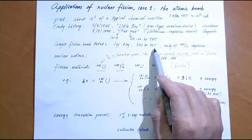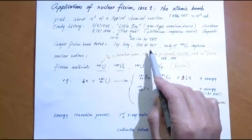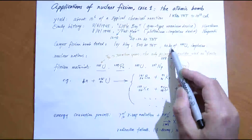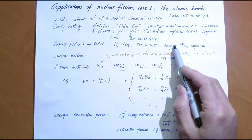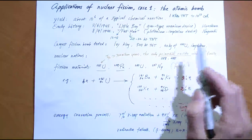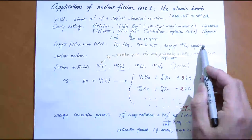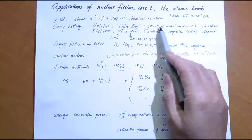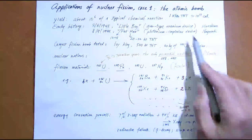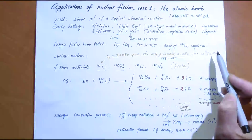Ivy King had a 60-kilogram uranium core and was of the implosion type, not the uranium gun type. We'll talk about the differences between these designs.